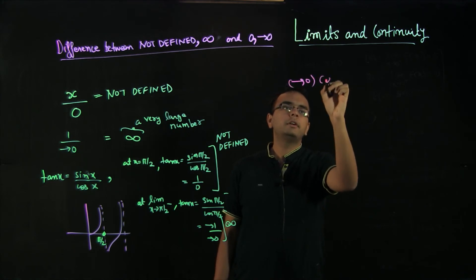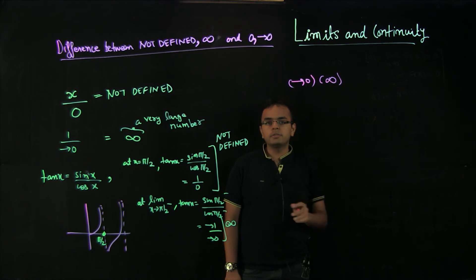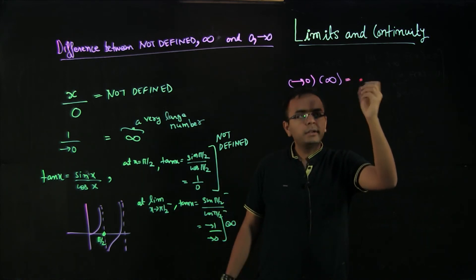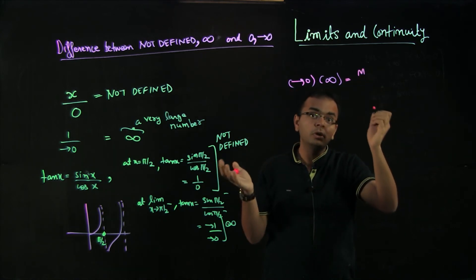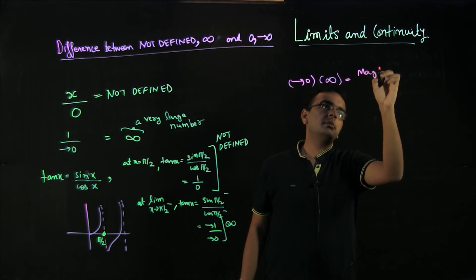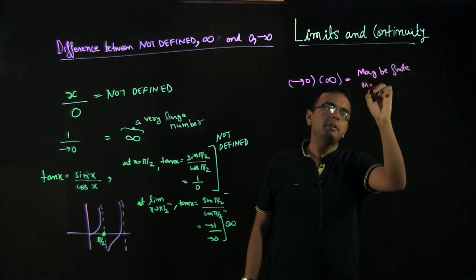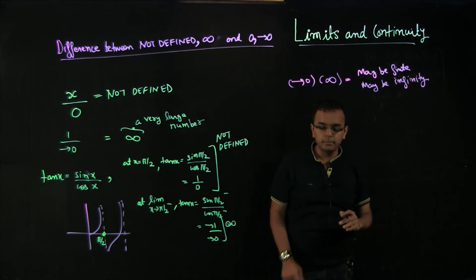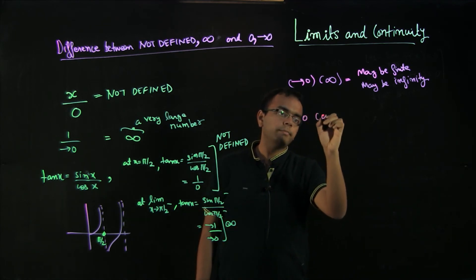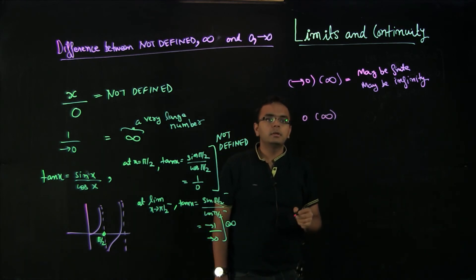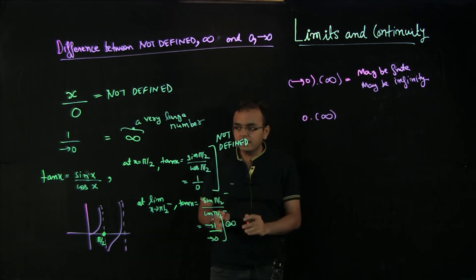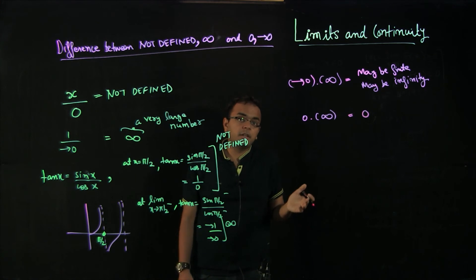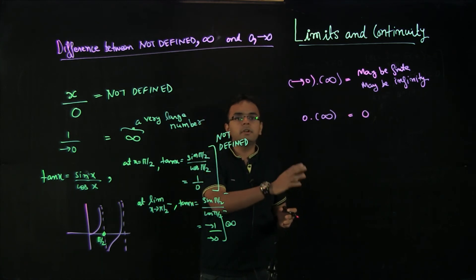If you are evaluating approaching 0 multiplied by infinity, the answer may be finite, may be infinity — we do not know, because a really small value multiplied by a really large value could be anything. This is actually the discussion of the next topic and forms the basis of almost the entire limits and continuity chapter. However, if you have exactly 0 multiplied by infinity, because it is exactly 0 multiplied by a really large number, the value is exactly 0.